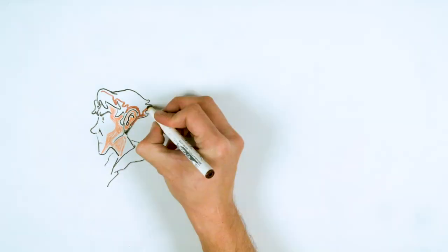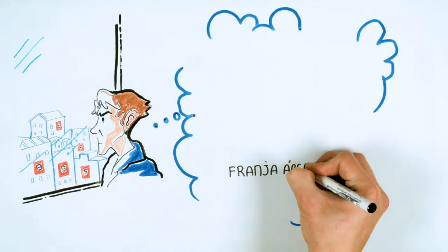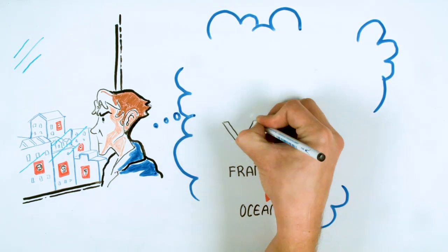Winston looked at the city from the window. London was cold and sad. It was part of the Area 1 strip, a province of Oceania, the territory dominated by the party.